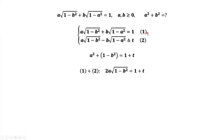Now take equation 1 plus equation 2. We have 2a times square root of (1 minus b squared) equals 1 plus t. You can see the positive and negative last two terms cancel, and the first term is doubled. The right-hand side is 1 plus t.